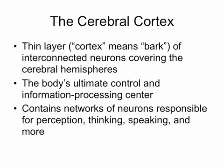First we're going to talk about what's known as the cerebral cortex, which is just a thin layer of neurons that cover the cerebral hemispheres. This is where the body's ultimate control and information processing centers live. Networks of those neurons are there to help you interpret or perceive, to help you think, speak, and so much more.